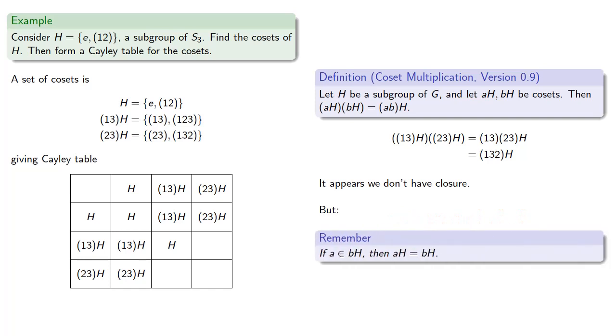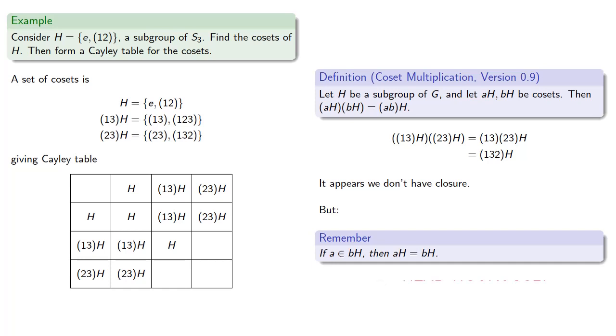But remember that if A is an element of the coset BH, then the coset AH is the same as the coset BH. And we notice that this element (1,3,2) is an element of the coset (2,3)H, and so that says the coset (1,3,2)H is actually the same as the coset (2,3)H. So our product (1,3,2)H is just (2,3)H.